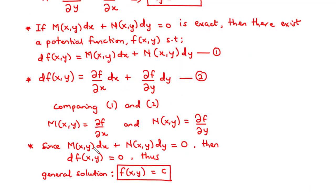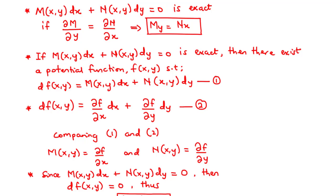Comparing equations 1 and 2, M(x,y) equals the partial derivative of f with respect to x, and N(x,y) equals the partial derivative of f with respect to y. Since the exact equation equals 0, the derivative of the potential function f(x,y) is also 0, so the general solution has the form f(x,y) = c. Today we will test whether a given equation is exact and, if so, find its general solution.